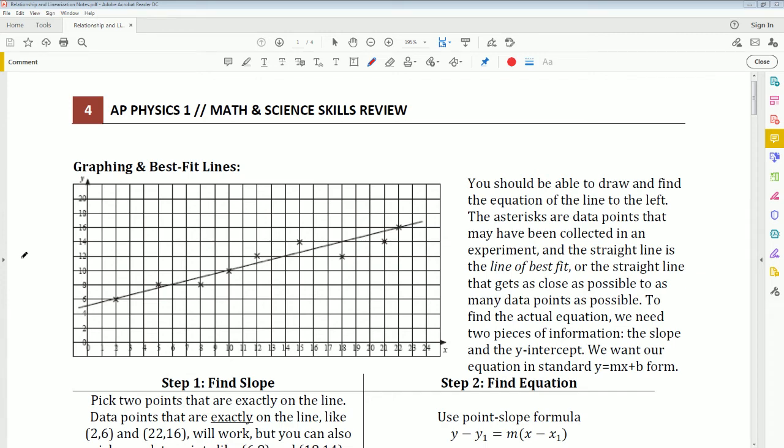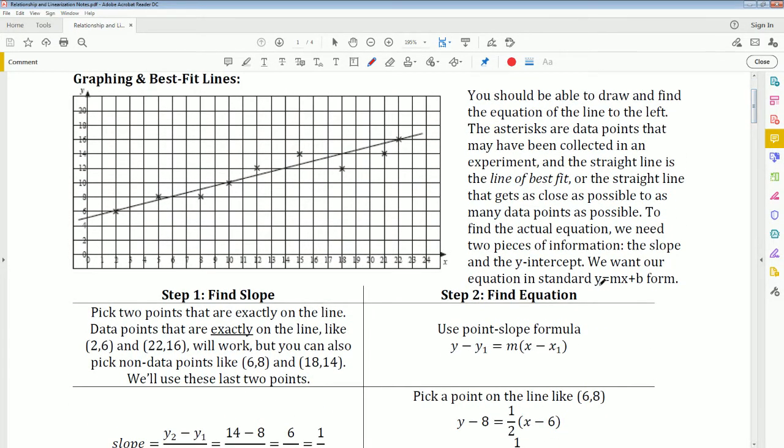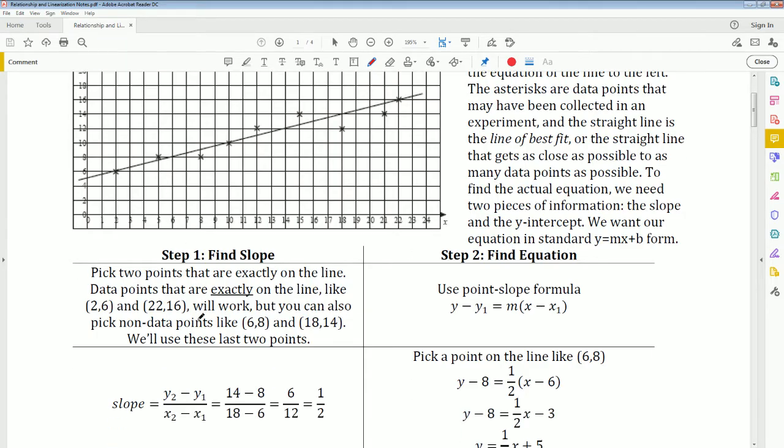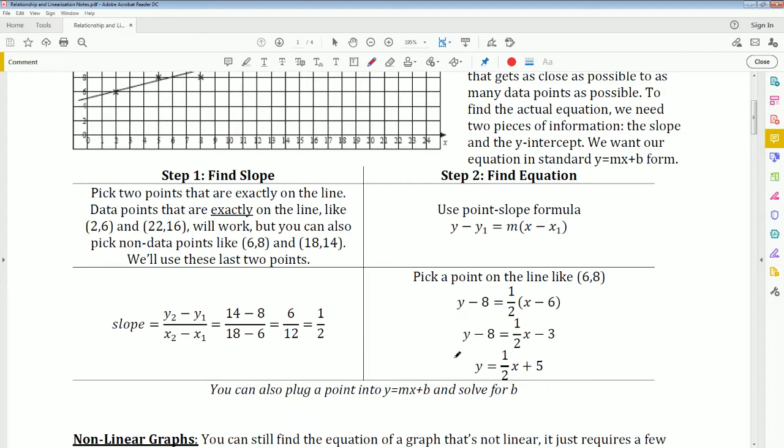Welcome, in this video I will be talking about relationships and linearization for AP physics. Here is a standard linear equation that is graphed by points and they drew a line of best fit. The line of best fit here is linear and you could write it in the form y equals mx plus b. You could calculate things like slope using the slope formula and you can find the equation by using the point-slope formula and so forth.